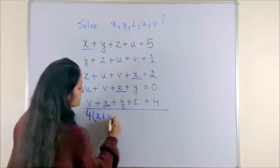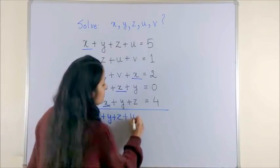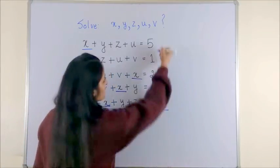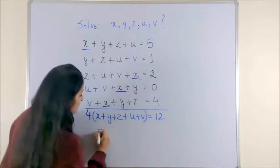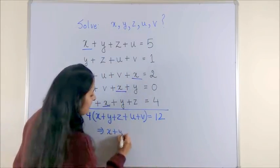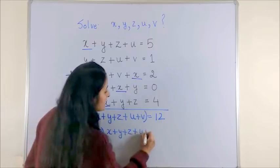So, we simply get 4 times x plus y plus z plus u plus v is equal to, when you add this, this gives us 12. So, this means x plus y plus z plus u plus v is 3.